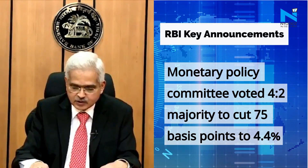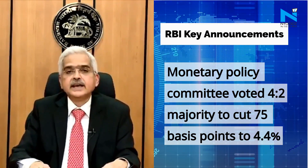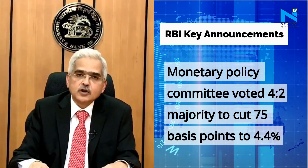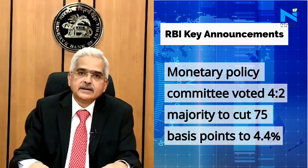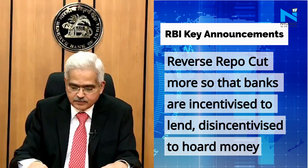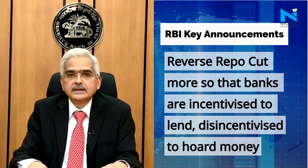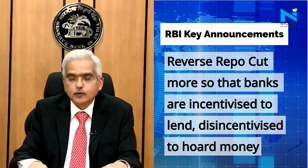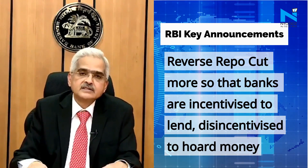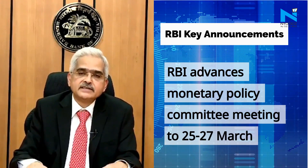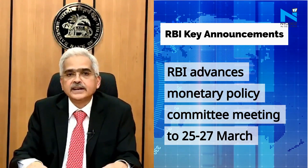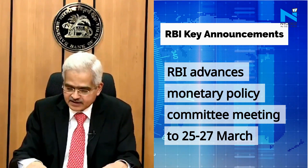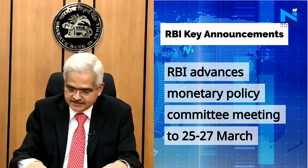There were some differences in the quantum of reduction. The MPC voted by a 4 to 2 majority to reduce the policy repo rate by 75 basis points. The rate cut decision is 75 basis points and accordingly the repo rate stands reduced from 5.15% to 4.4%.